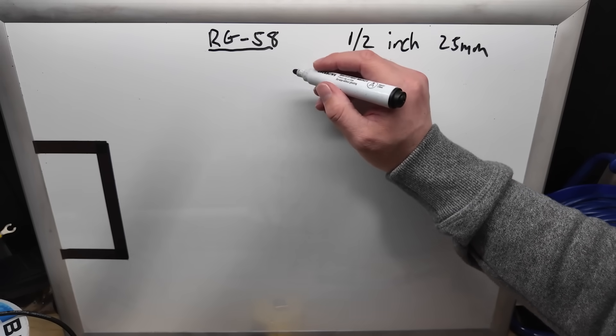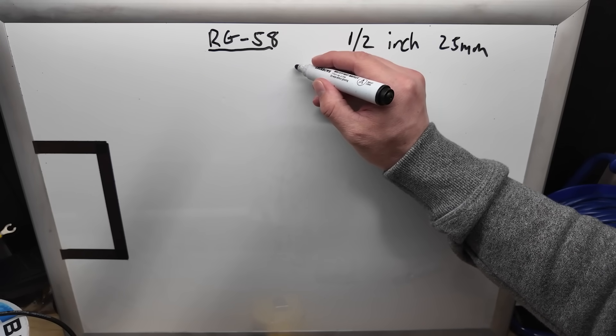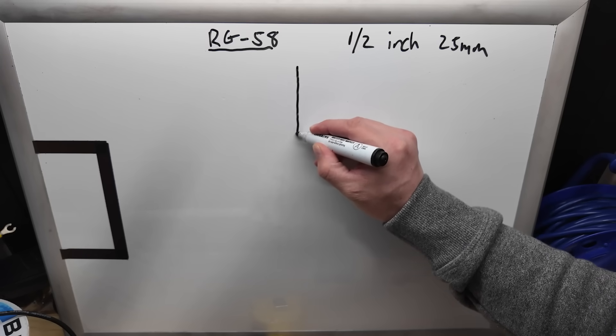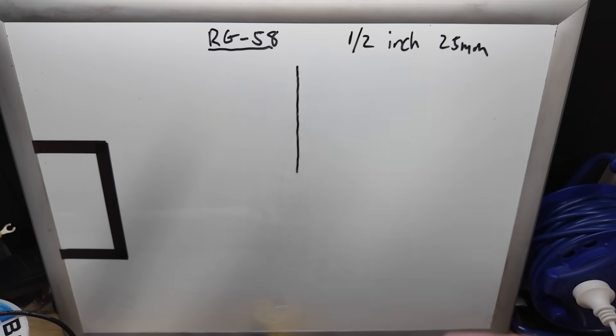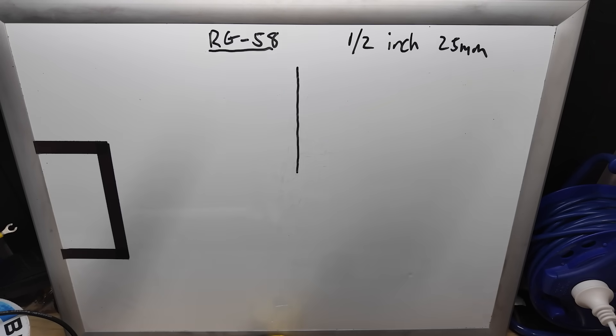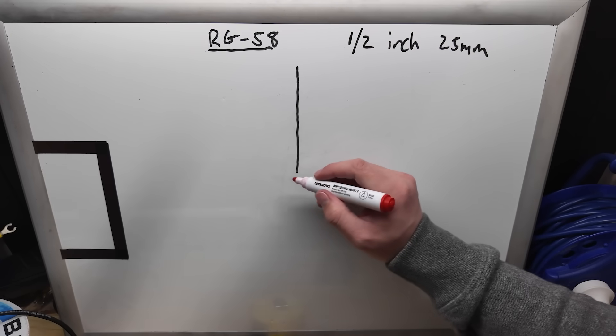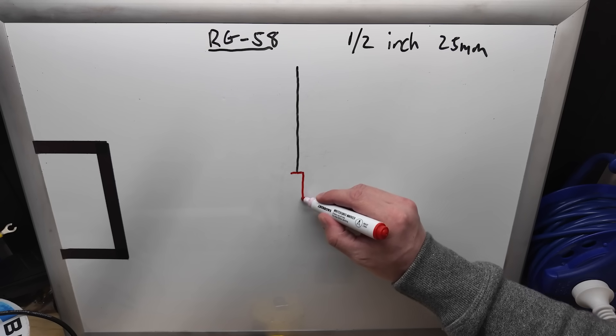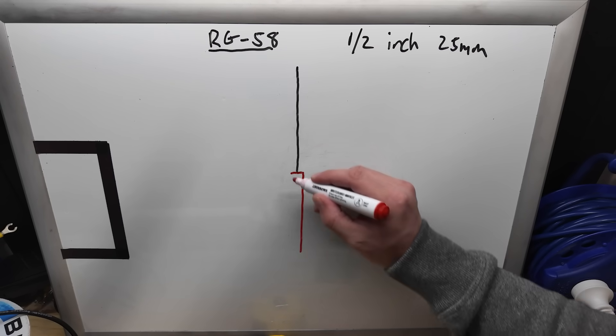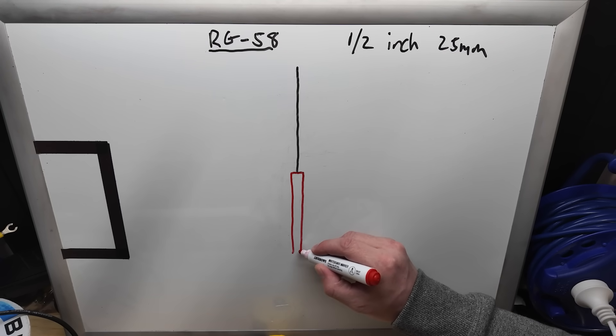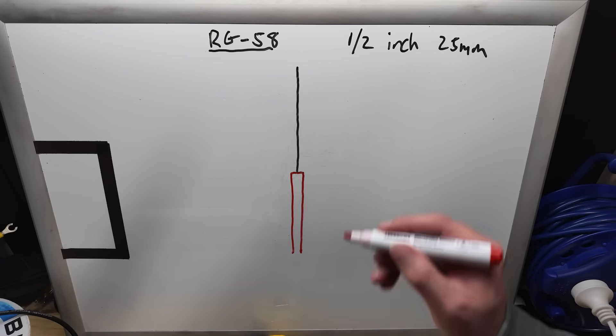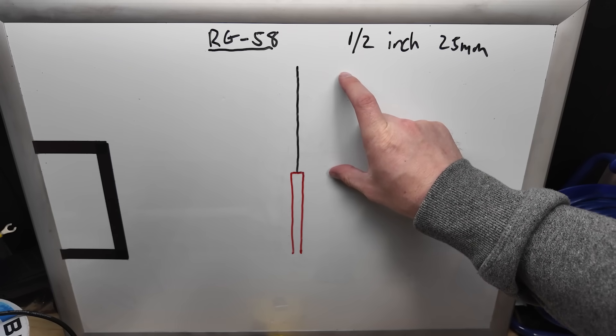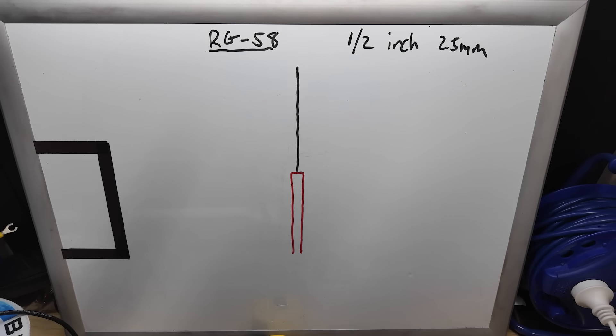So what we've got is the top half of the antenna where we remove the braid and shield so that we just have the centre conductor sitting there. Then we leave the shield and the sheath here for the bottom half of the antenna. So that's what our coax basically looks like. And we've got now two parts of our antenna, the top half and the bottom half.